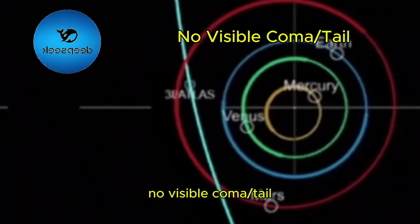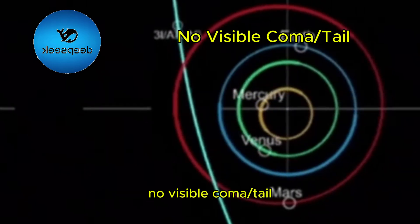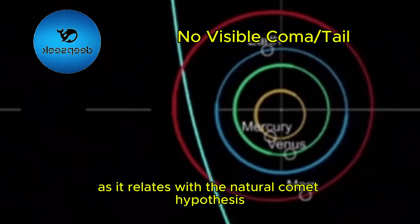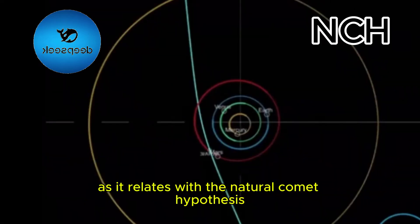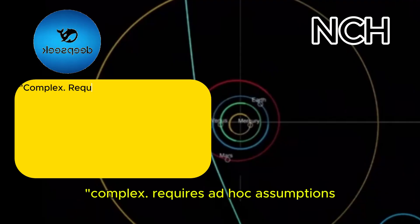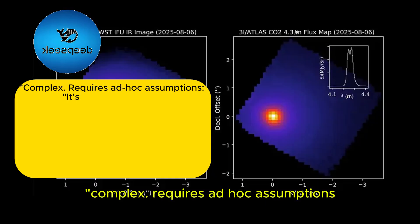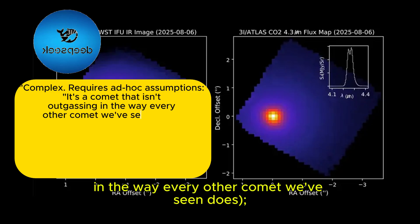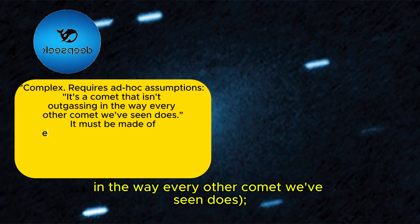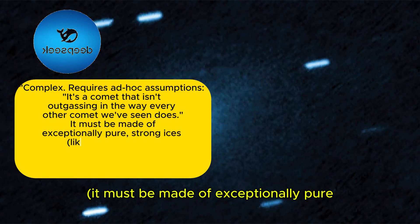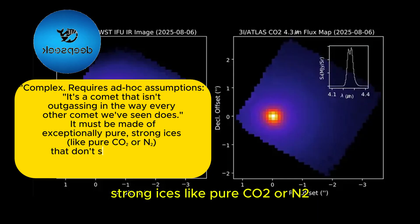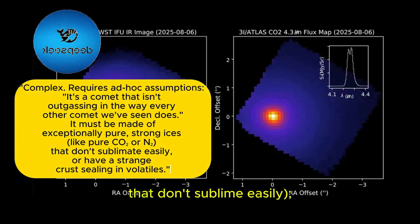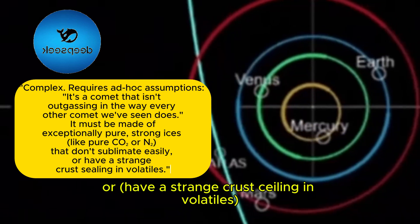Observable 2: No visible coma slash tail. Direct quote as it relates with the natural comet hypothesis: Complex. Requires ad hoc assumptions. It's a comet that isn't outgassing in the way every other comet we've seen does. It must be made of exceptionally pure, strong ices, like pure CO2 or N2, that don't sublimate easily.